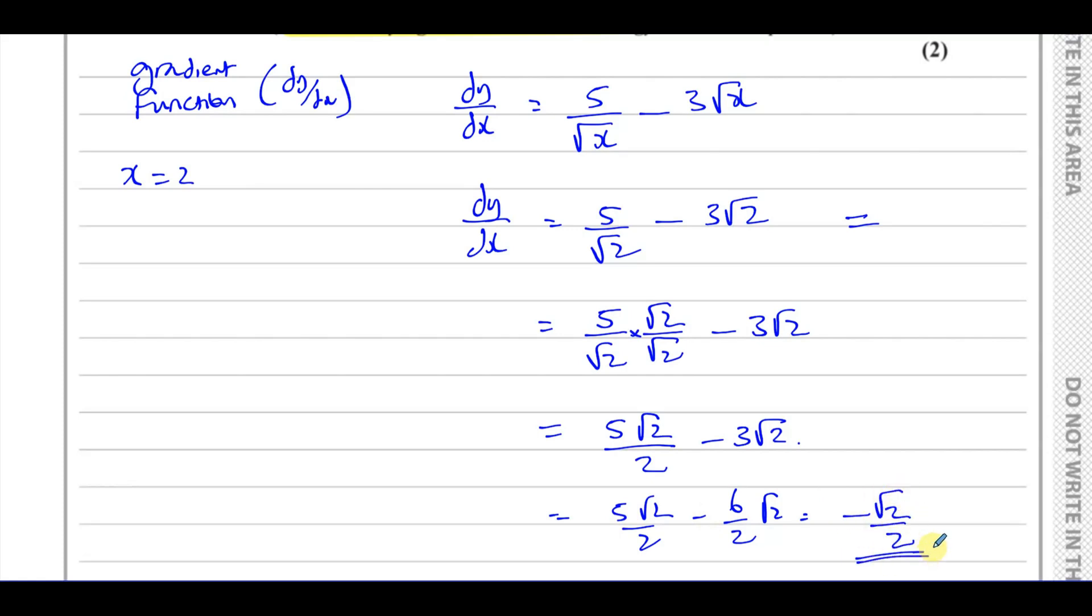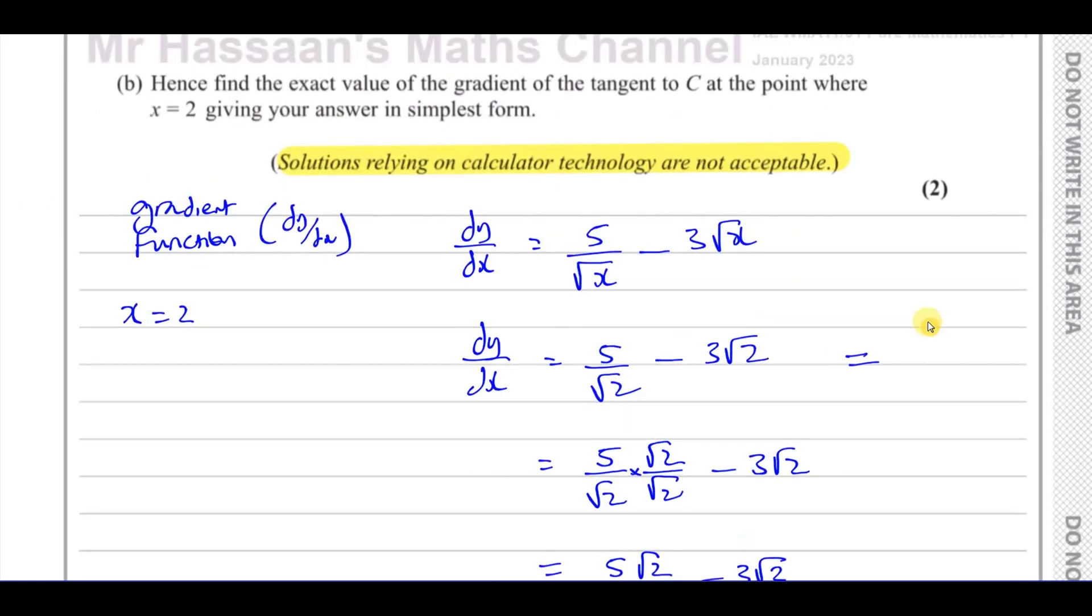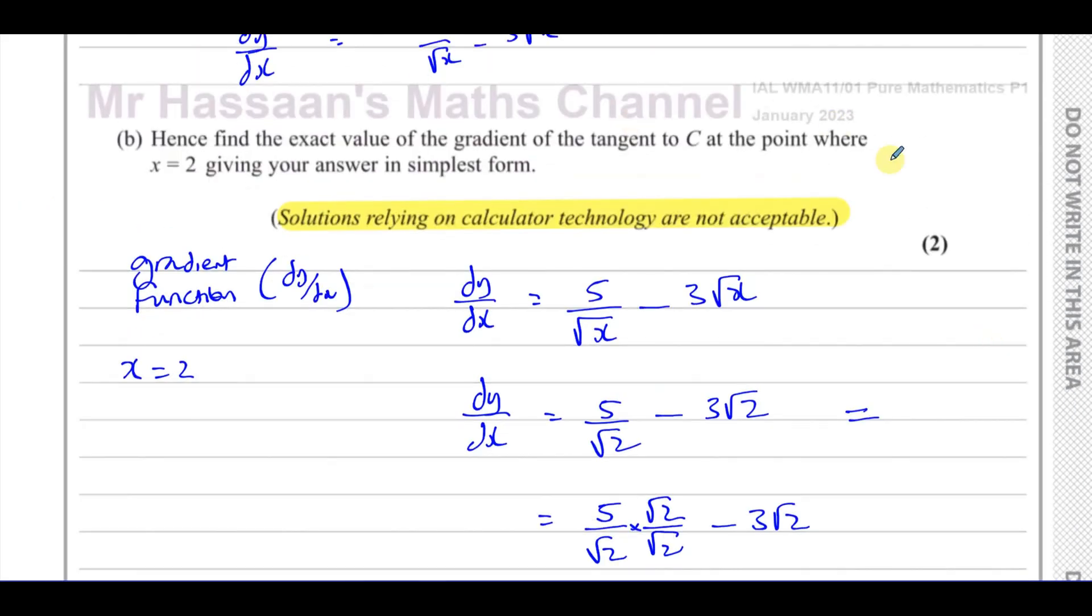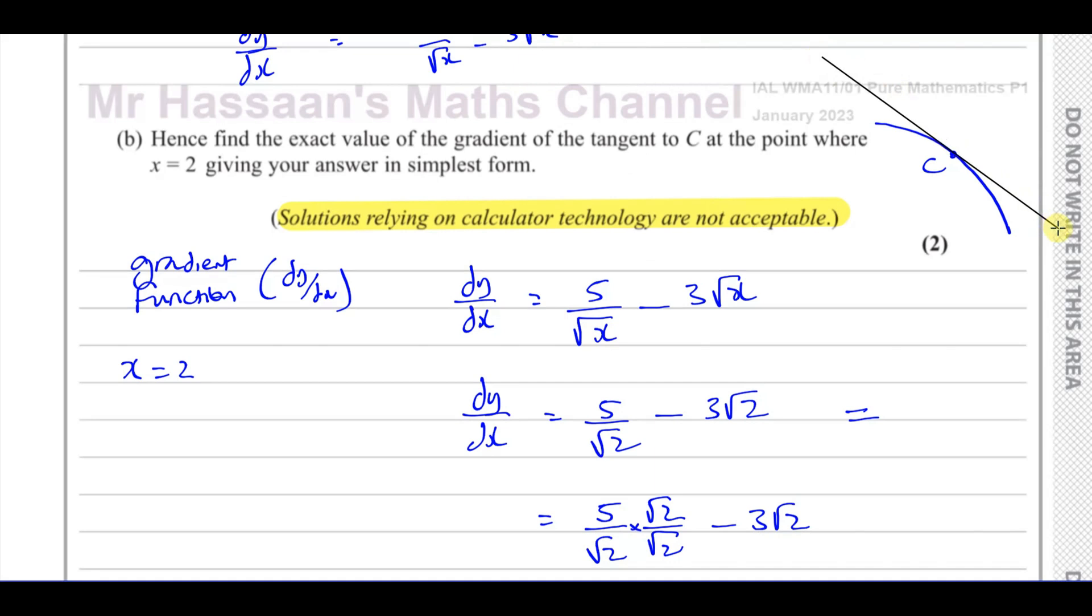That's your answer now in its simplest form. That is the gradient of the tangent to C at the point where x equals 2. So remember a little point here is say this is the curve. Say this is the point C. The tangent to the curve would be a line which touches the curve at that particular point. So supposing that's the point where x equals 2.